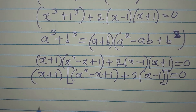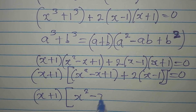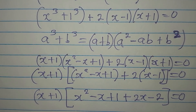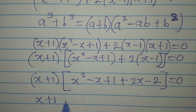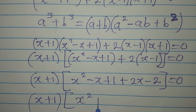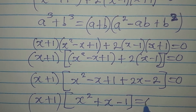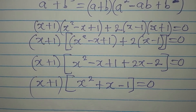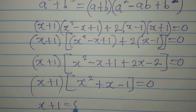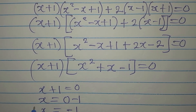Factoring out x plus 1, we get x plus 1 times the quantity x squared minus x plus 1 plus 2 times x minus 1, equals 0. Opening the bracket: x squared minus x plus 2x minus 2, which simplifies to x squared plus x minus 1. So we have x plus 1 times x squared plus x minus 1 equals 0. Setting x plus 1 equal to 0 gives x equals minus 1. This is one of the solutions.